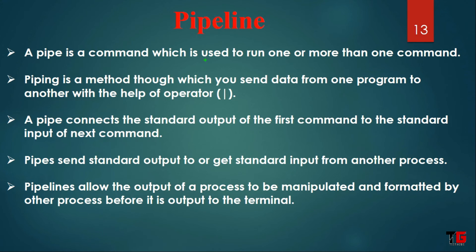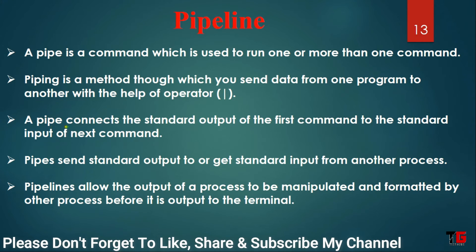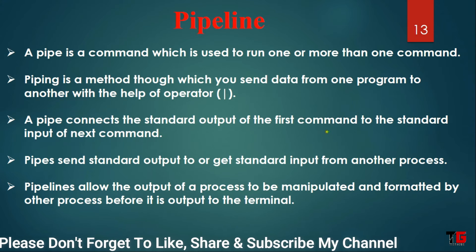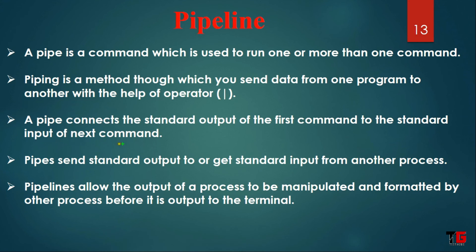Next is pipeline. A pipe is a command which is used to run one or more than one command. When we use the pipe symbol, the output of the first command becomes the input of the second command. A pipe connects the standard output of the first command to the standard input of the next command. Pipe sends standard output to get standard input from another process. Pipeline allows the output of a process to be manipulated and formatted by another process before it is output to the terminal.